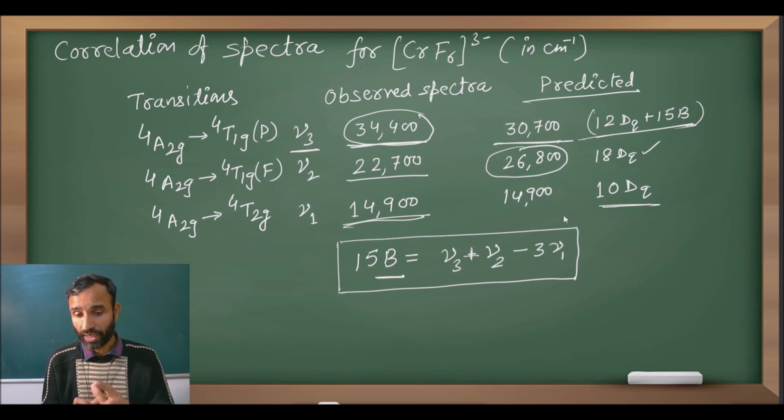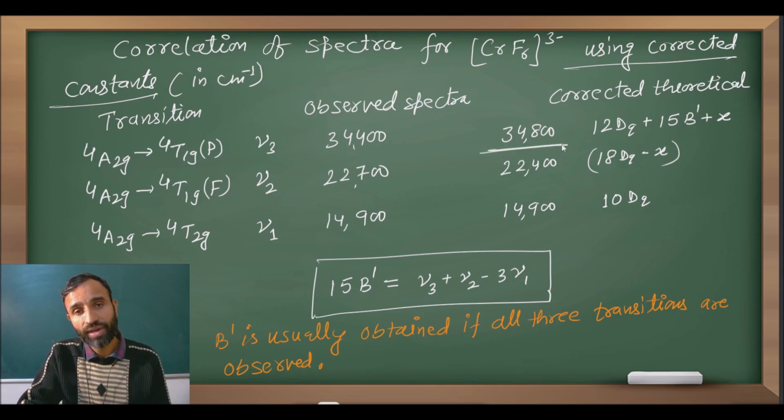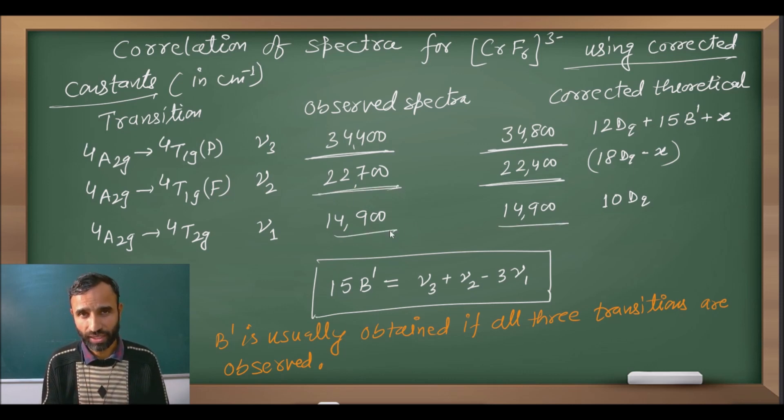For nu 1, it doesn't make any difference whether there is any mixing or not. That means when these predicted values are away from the observed value, some correction is required. So when this correction is introduced, the corrected constants are introduced, then see the value. Corrected theoretical value comes out to be 34,800, very close to observed value. Corrected value is 22,400 for nu 2, very close to observed. Third has no difference at all.